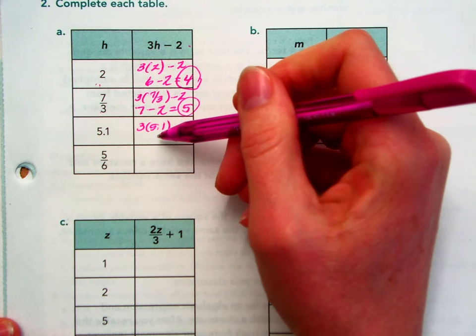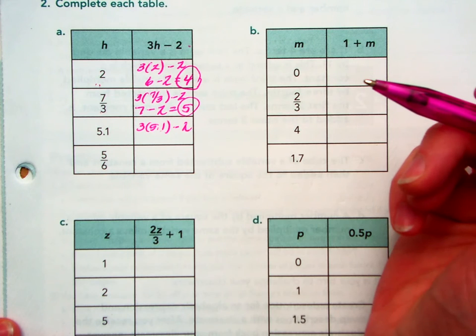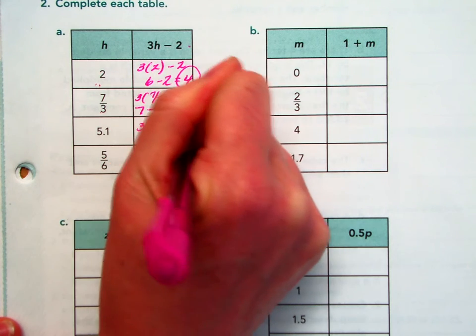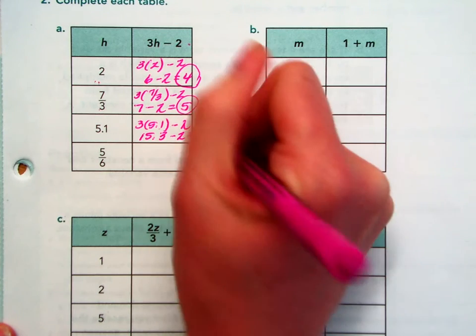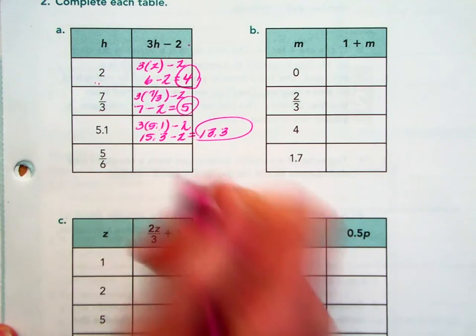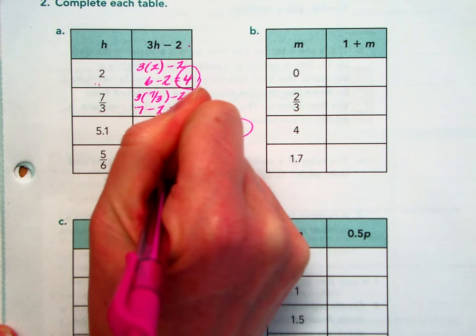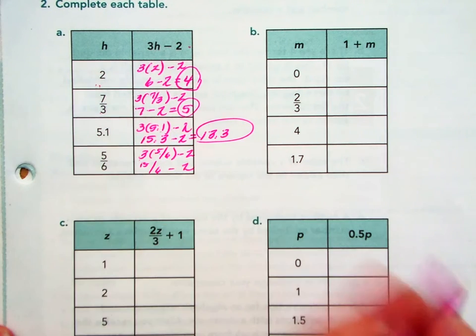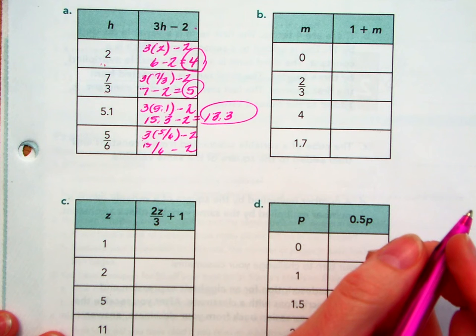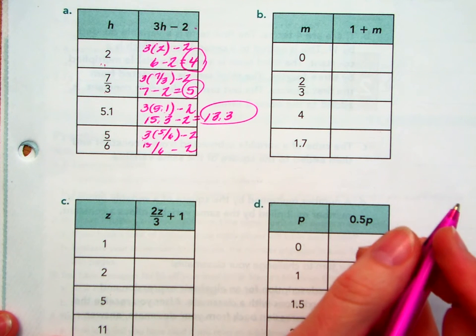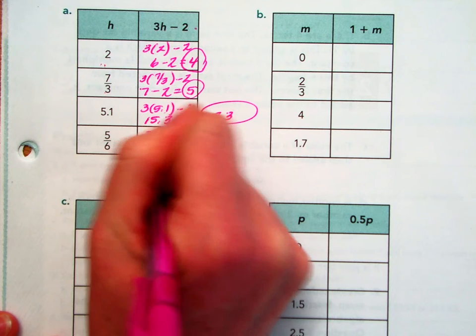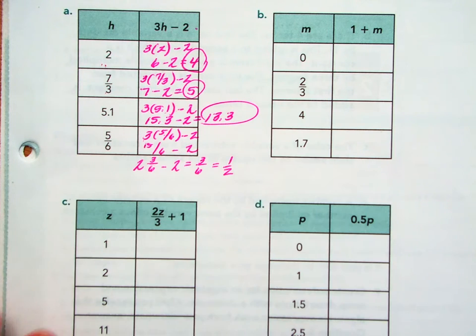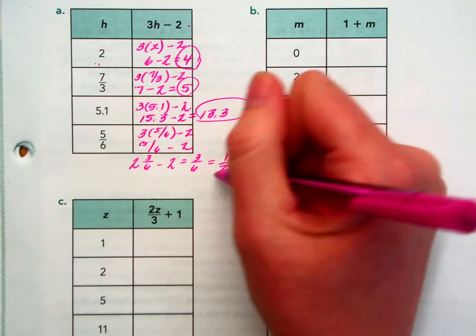Now, this time, H is worth 5.1. So 3 times 5.1 subtract 2. Notice that the expression doesn't change. What H is worth changes. So 3 times 5 is 15, times 0.1 would be 15.3. Minus 2, I think we're looking at 13.3. Yep, 13.3. Last, 5.6. 3 times 5.6 minus 2. See, 3 times 5 is 15. 15 over 6 minus 2. 15 over 6 is not a nice pretty number, is it? So let's try 2 and 3.6 minus 2. Is that going to leave us 3.6, which is 1.5? Which is 1.5. Checking the answer key for you? Yes. There we go.